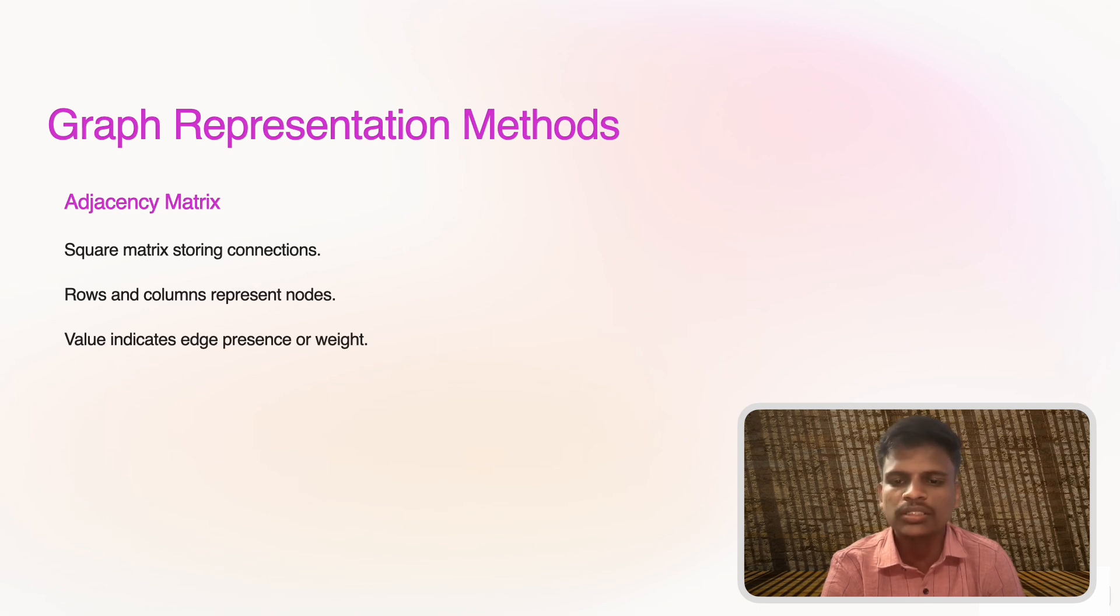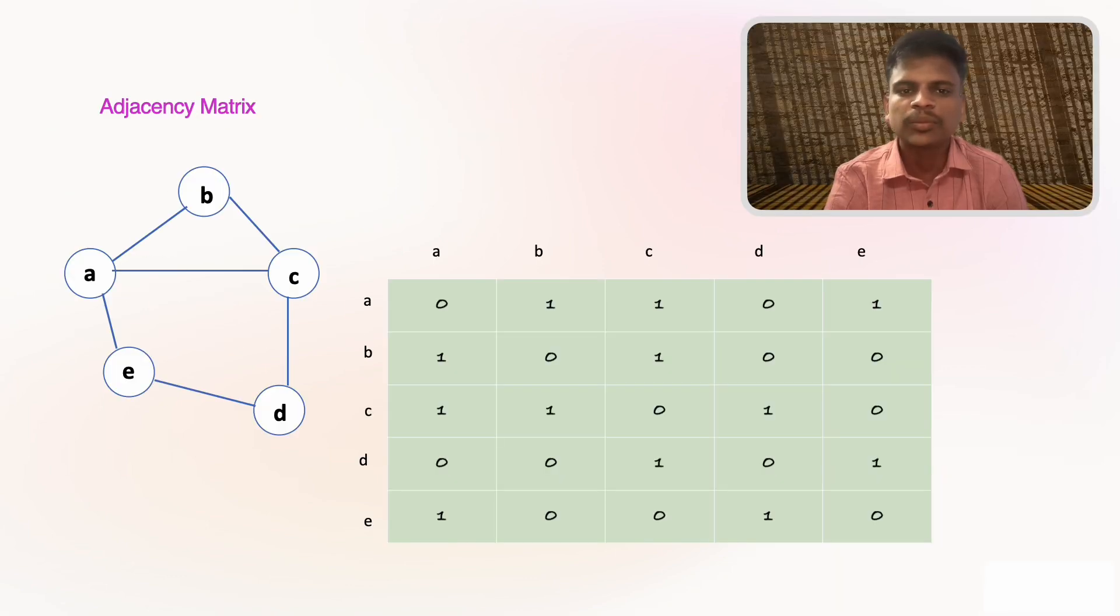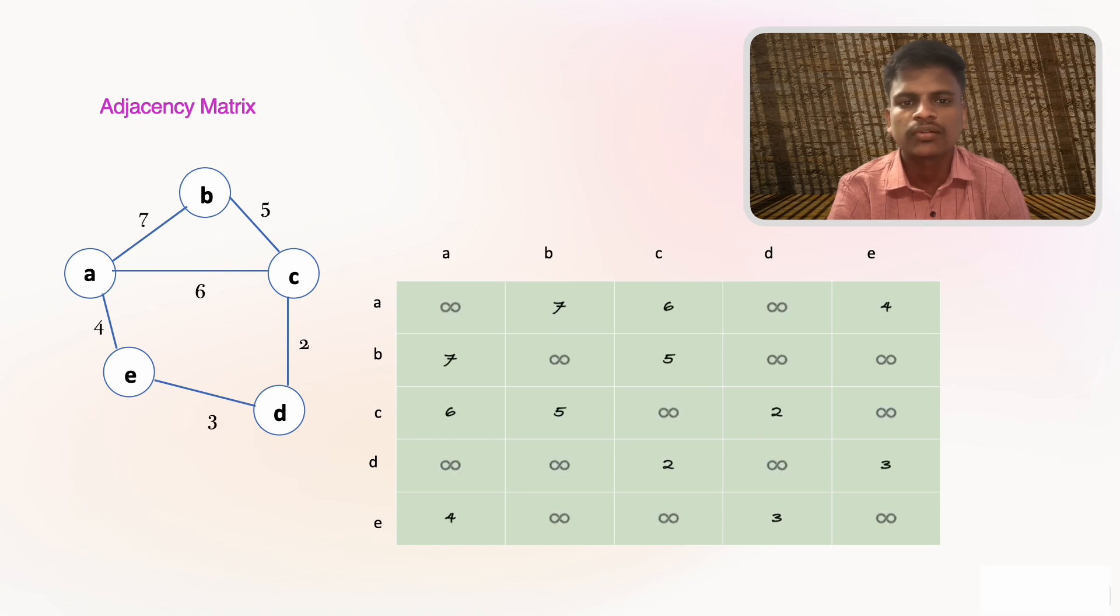Graph representation methods: there are two main ways to represent graphs in a computer system. First, adjacency matrix: this is a square matrix where each cell represents the connection or weight between two nodes. If there is an edge between nodes, we mark it in the matrix. If there is no edge, we leave it blank or use a symbol. This method is useful for dense graphs, but it requires more memory.